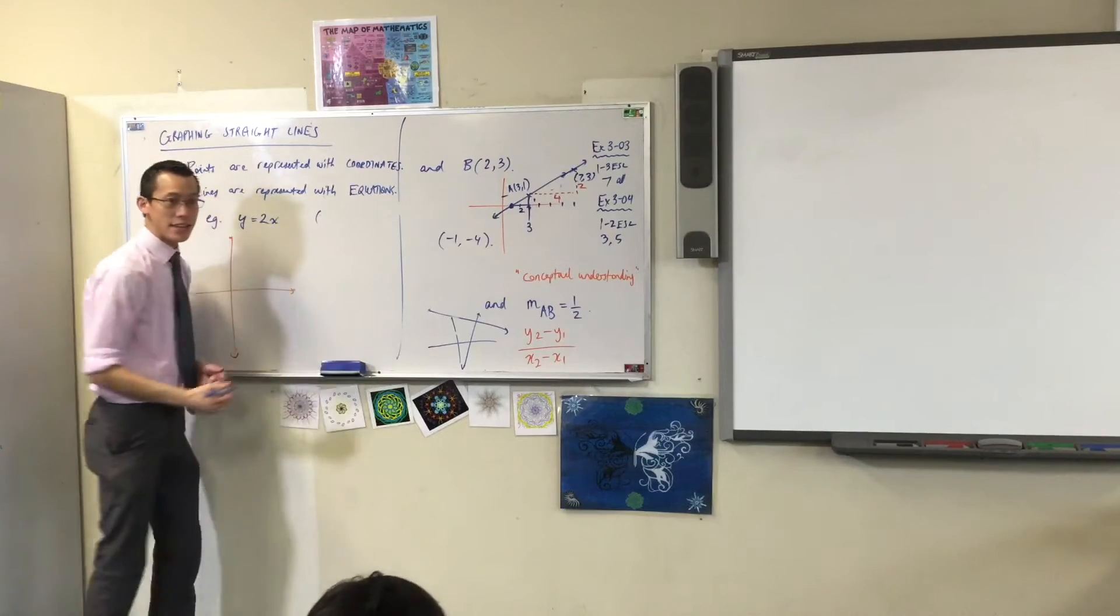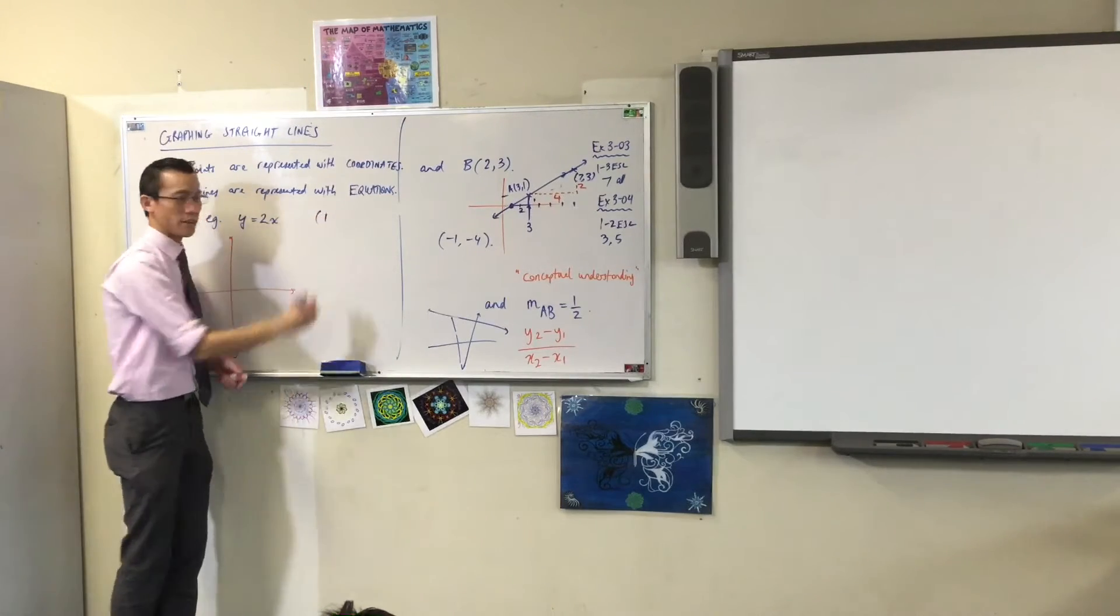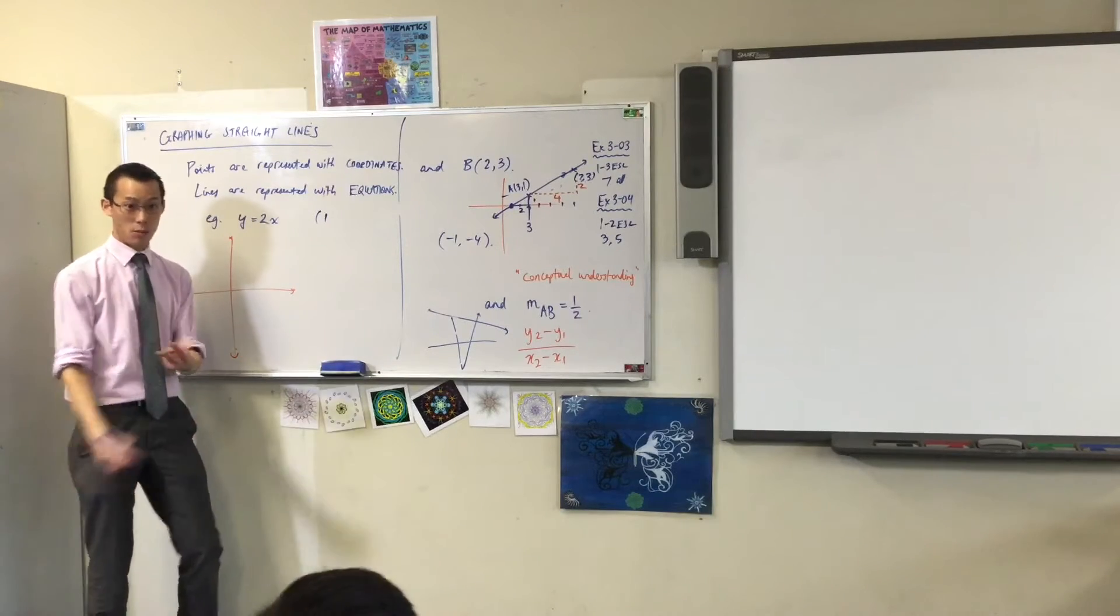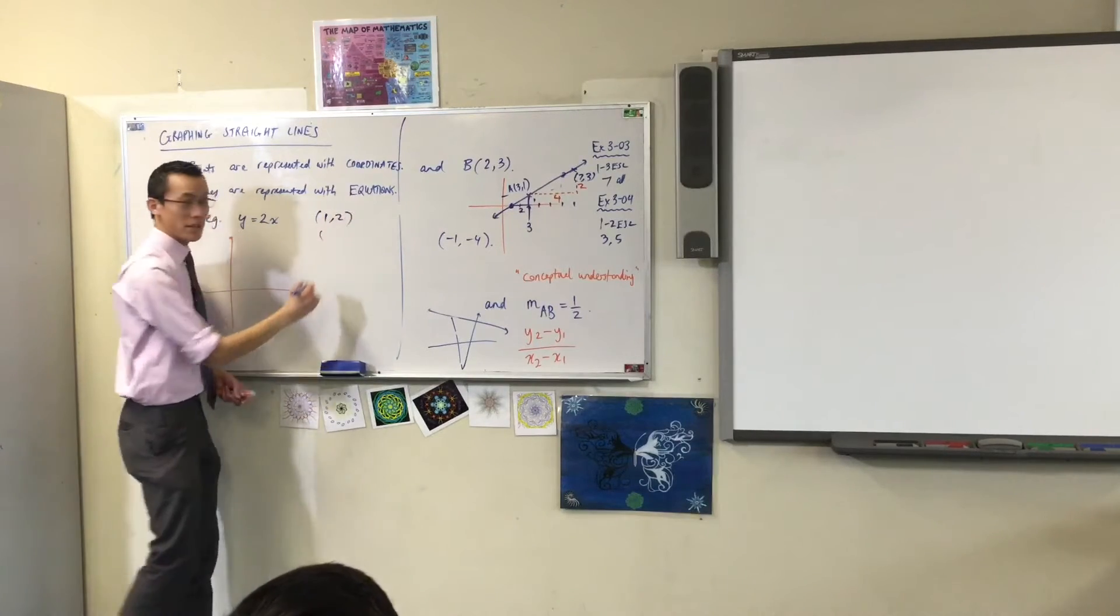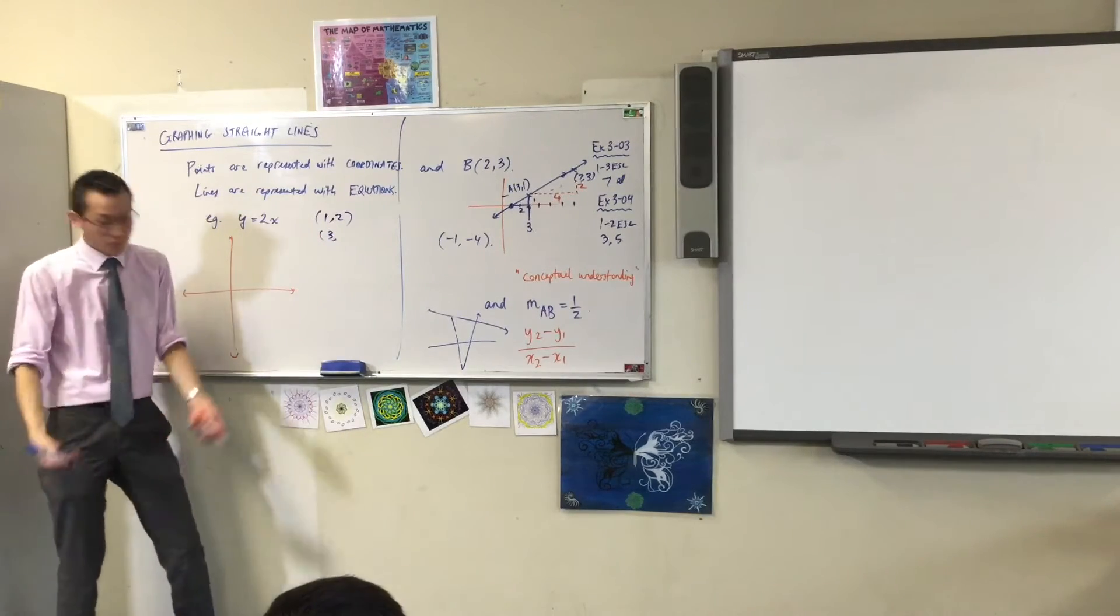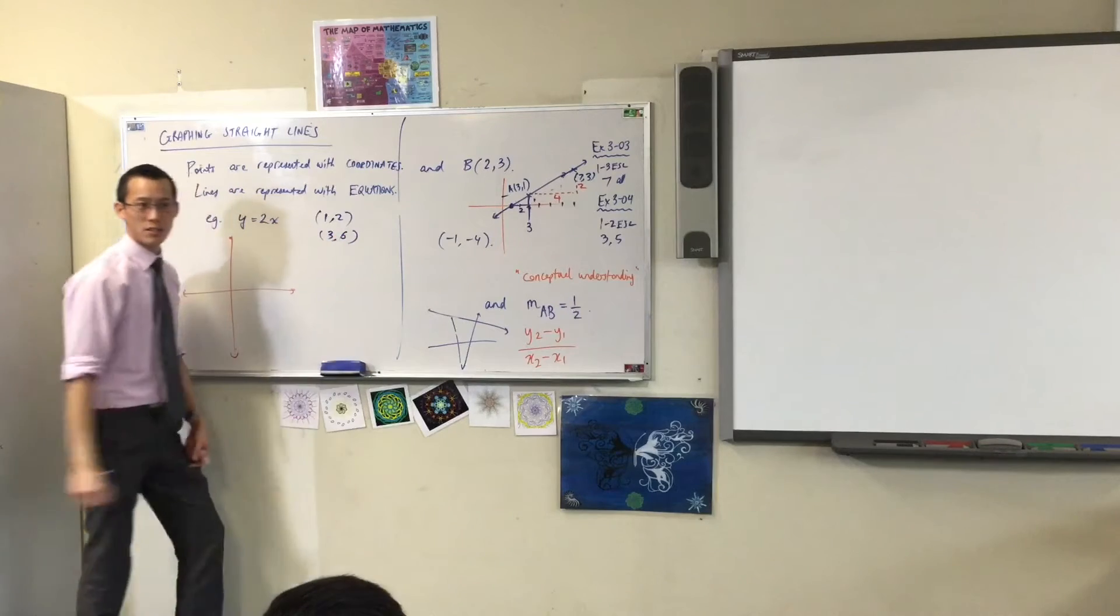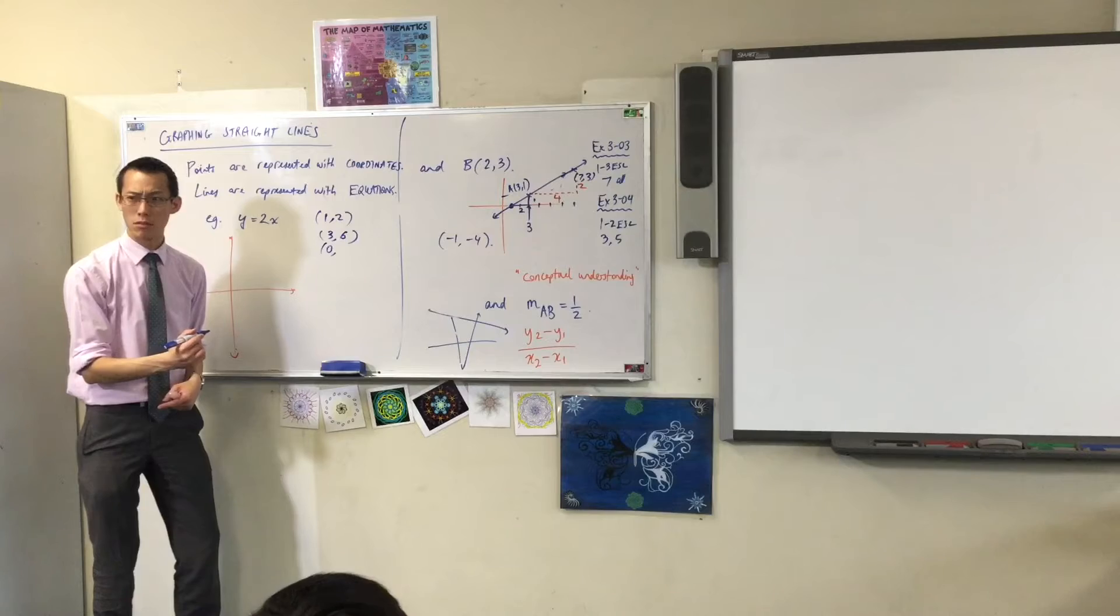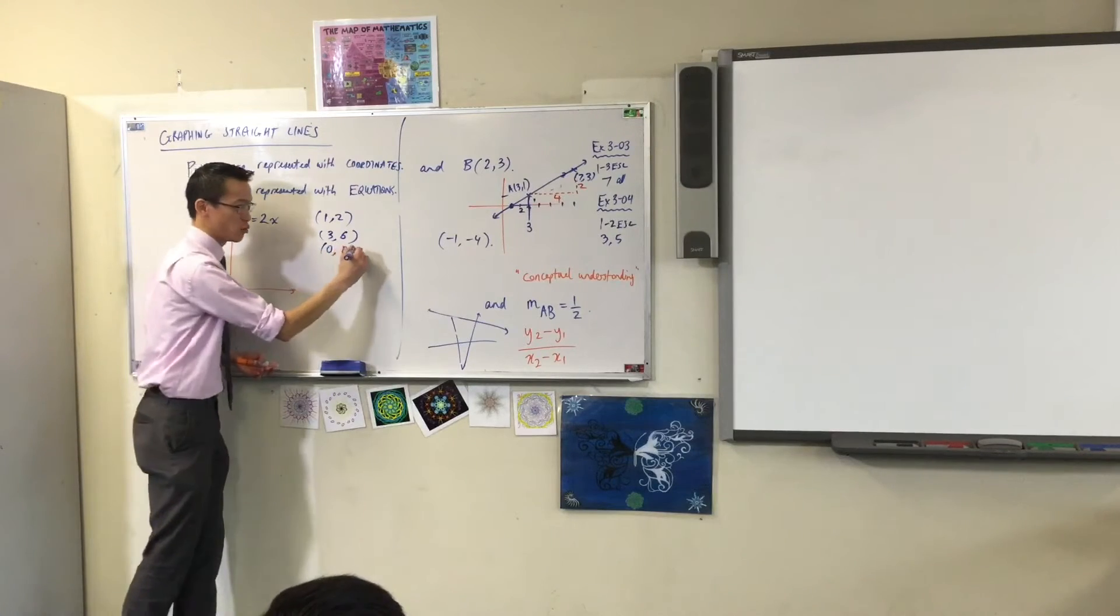For example, if the X value were, say, 1, what would the Y value be? It'd be double that, which is 2. Bless you. If the X value were 3, what would the Y value be? It would be twice the size, which is 6. What if the X value were 0? Well, twice 0 is still 0.